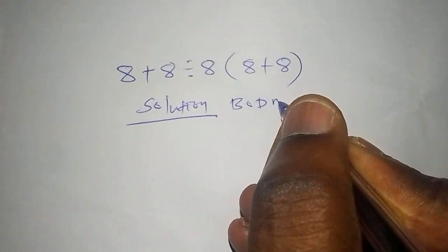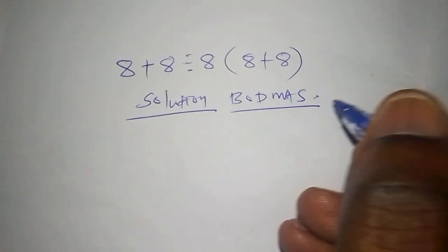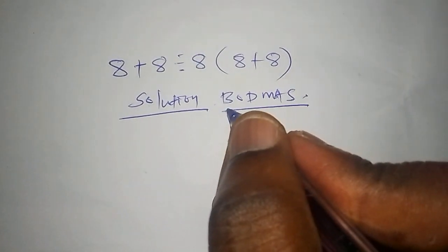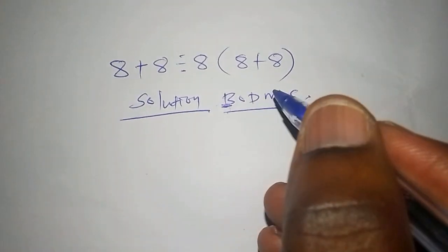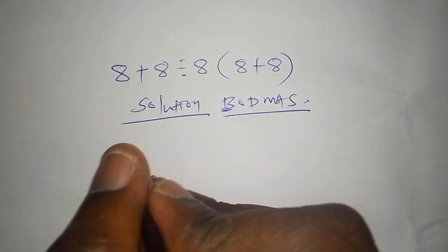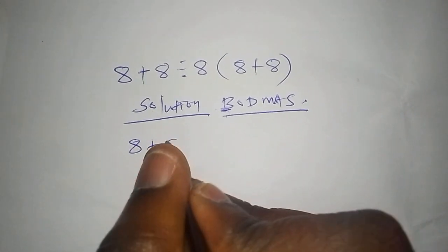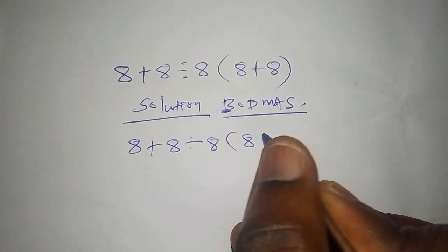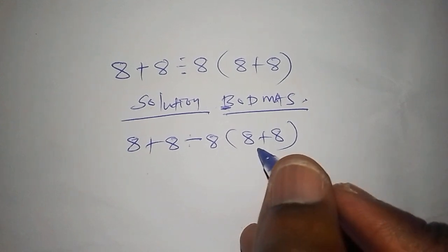Let's look at BODMAS under solution. B stands for bracket first, so we're going to work out the bracket first. Let's write the whole equation: 8 + 8 ÷ 8 × (8 + 8). From there, let's work out the bracket first.